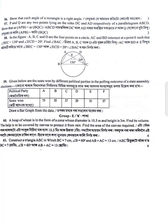Show the rectangle of the right angle. Given below are the seats won by different political parties in the polling outcome of a state assembly election.